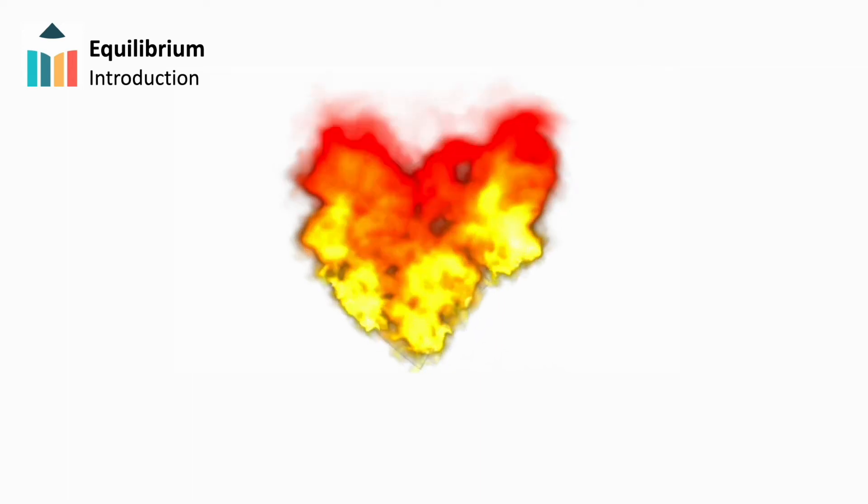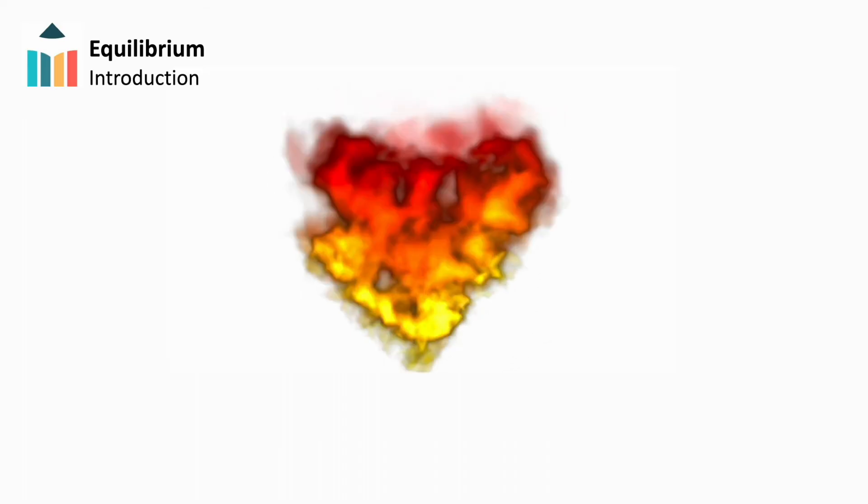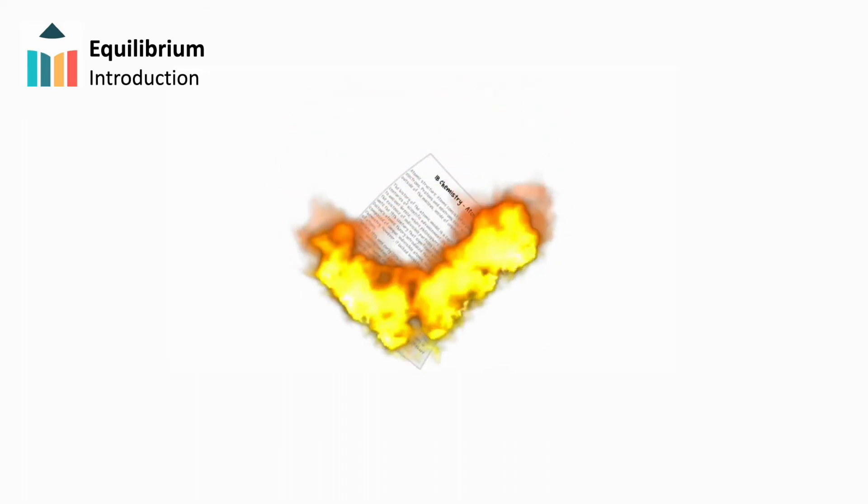When a piece of paper burns, it is difficult to imagine this chemical reaction running in the reverse direction, to combine the smoke and ashes and reform the cellulose molecules of which the paper is made.